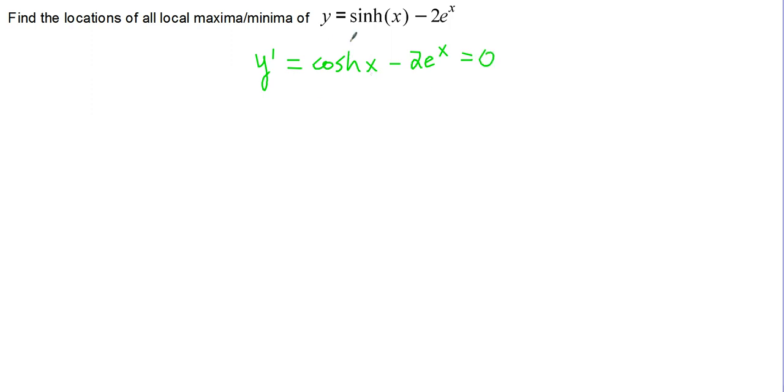This is a little bit of a problem with cosh(x) and an e to the x, but we know that cosh(x) has a form of e to the x plus e to the negative x over 2. And then we'll subtract the 2e to the x equals 0. And we should be able to solve this equation for x fairly easily.